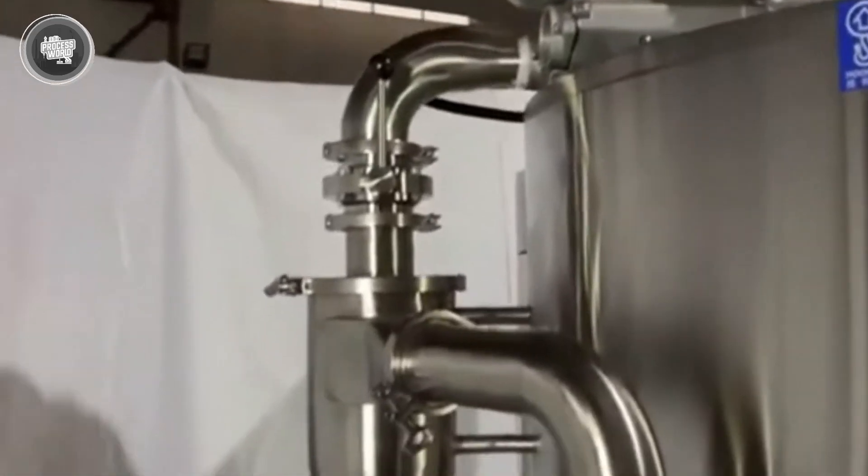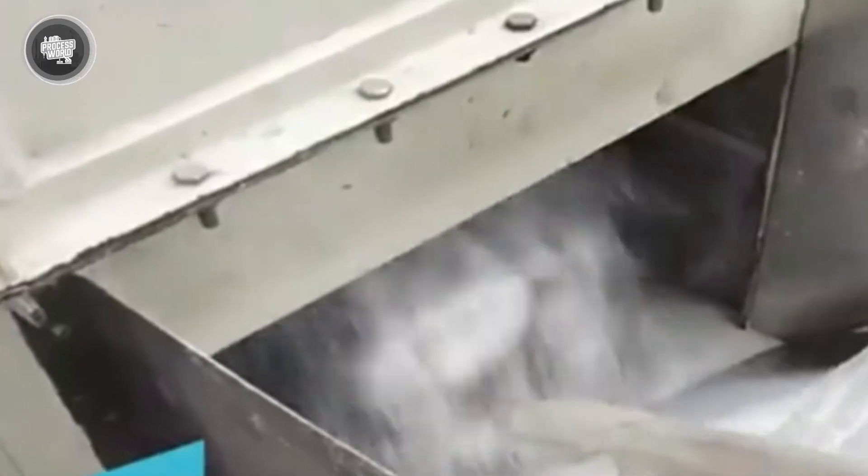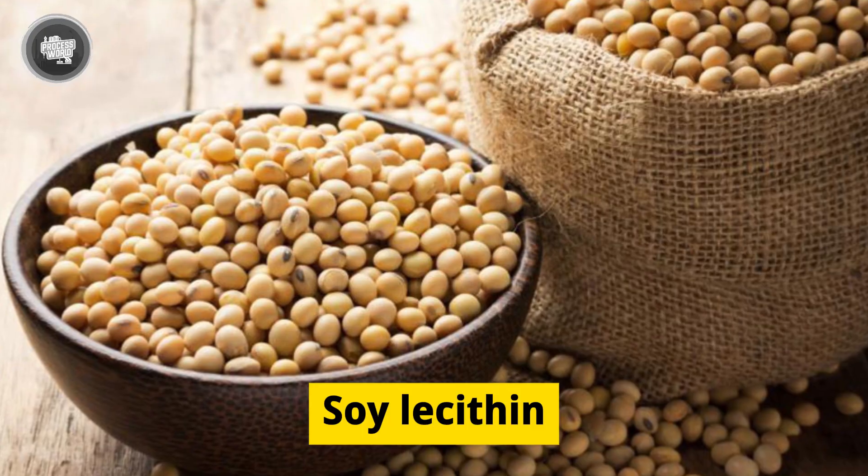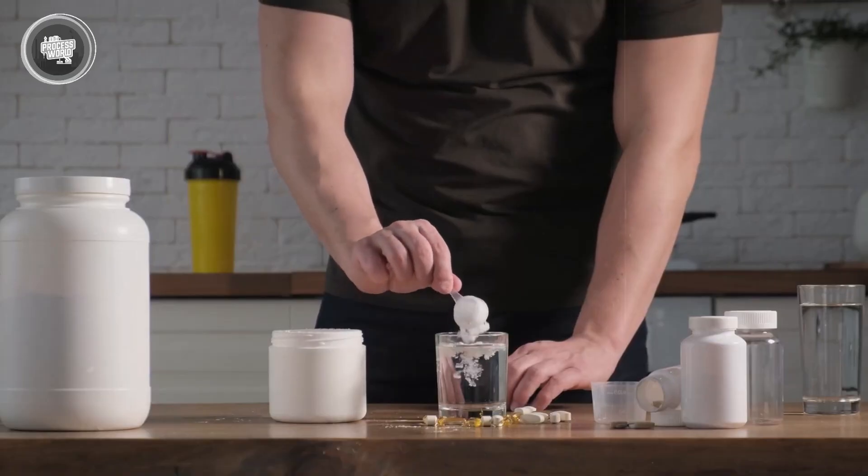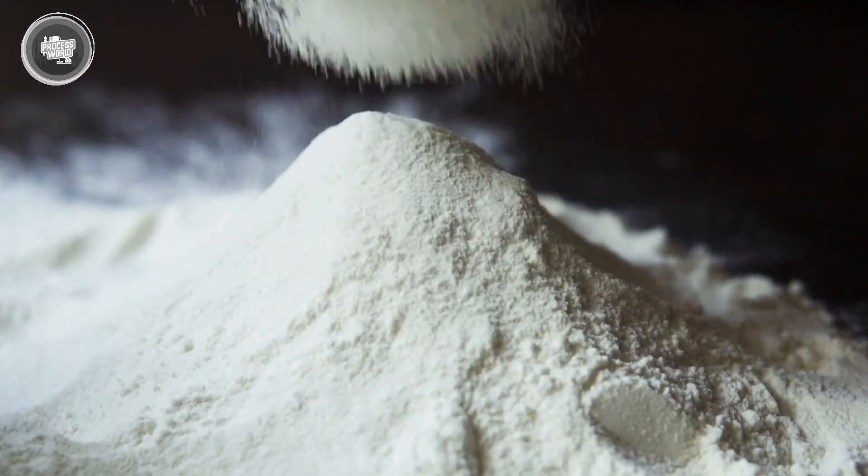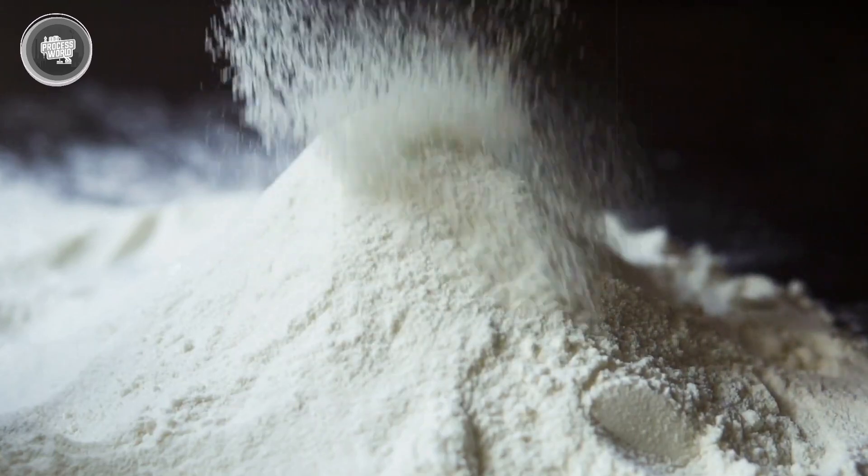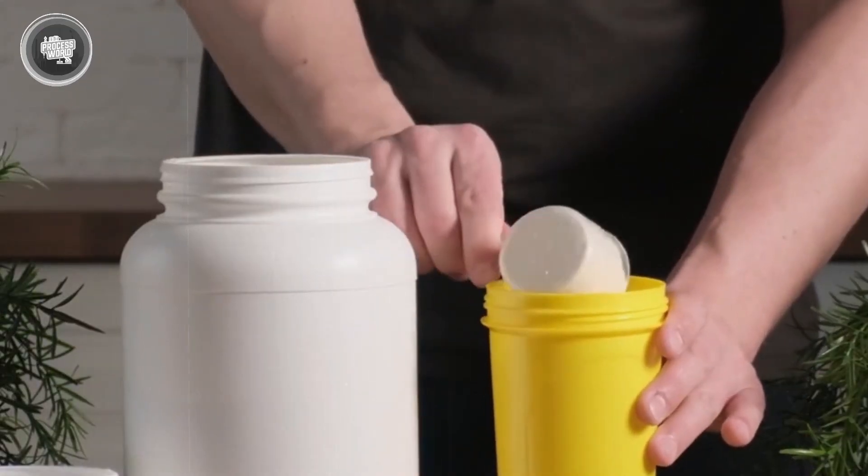It is light, dry, and has a fine texture at this point. One more step will help increase its usability. Soy lecithin is added to guarantee it melts easily when combined with water. This component helps avoid clumping, therefore simplifying the use of powdered milk in beverages, baked goods, and other recipes.